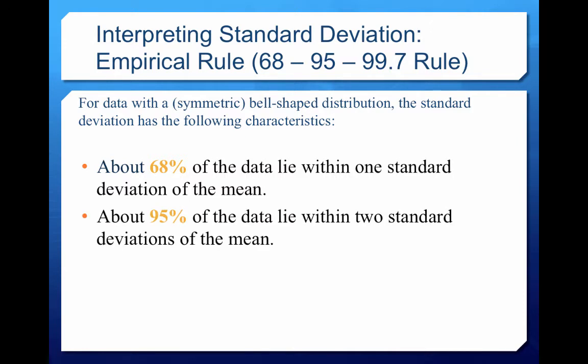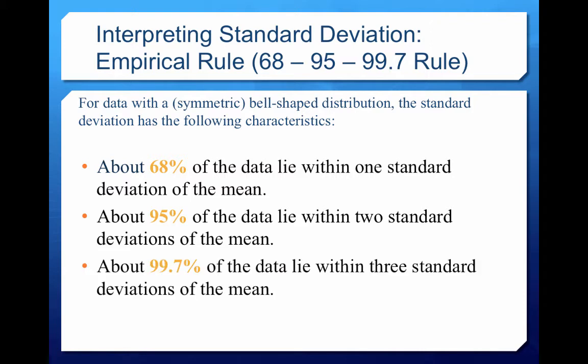About 95% of the data lie within two standard deviations of the mean. So now let's go two standard deviations out from the mean, and we're going to grab 95% of our data. And then lastly, 99.7% of the data lie within three standard deviations of the mean. So here we go three standard deviations from the mean and we're going to grab 99.7% of our data.